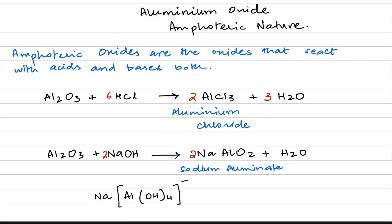Another way of writing the same sodium aluminate is NaAl(OH)₄, where aluminium forms a complex ion with hydroxide ions. When this complex ion is dehydrated — meaning it loses water — it produces the other formula of sodium aluminate. Both are technically the same chemical substance but with different chemical formulas.